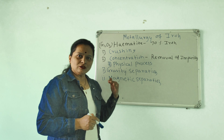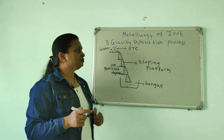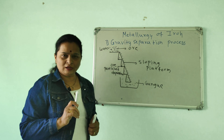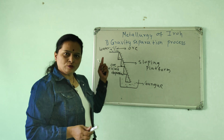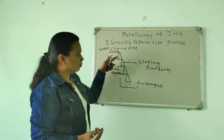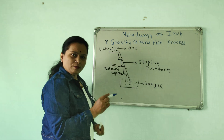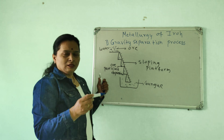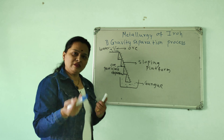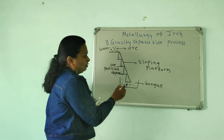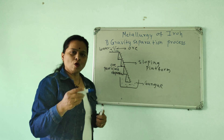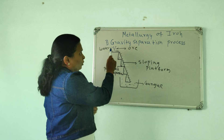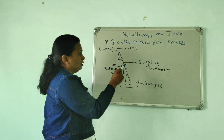The gravity separation process is done with the hematite ore in powder form on a sloping platform. There are depressions where heavy ore particles settle down, while gang particles like rock, sand, and clay are washed away by water flow.